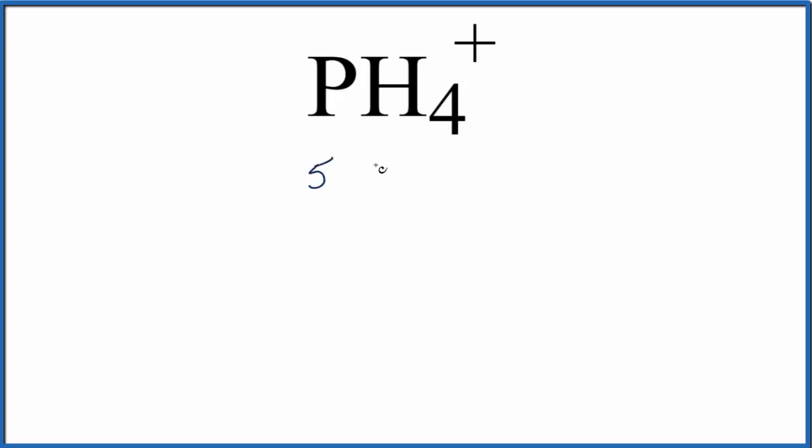We have 5 for phosphorus, that's in group 15, sometimes called 5A. Hydrogen is 1, but we have 4 hydrogens. And this plus sign means we've lost an electron. Electrons are negative and when we lose one we become positive. So we need to subtract one valence electron.